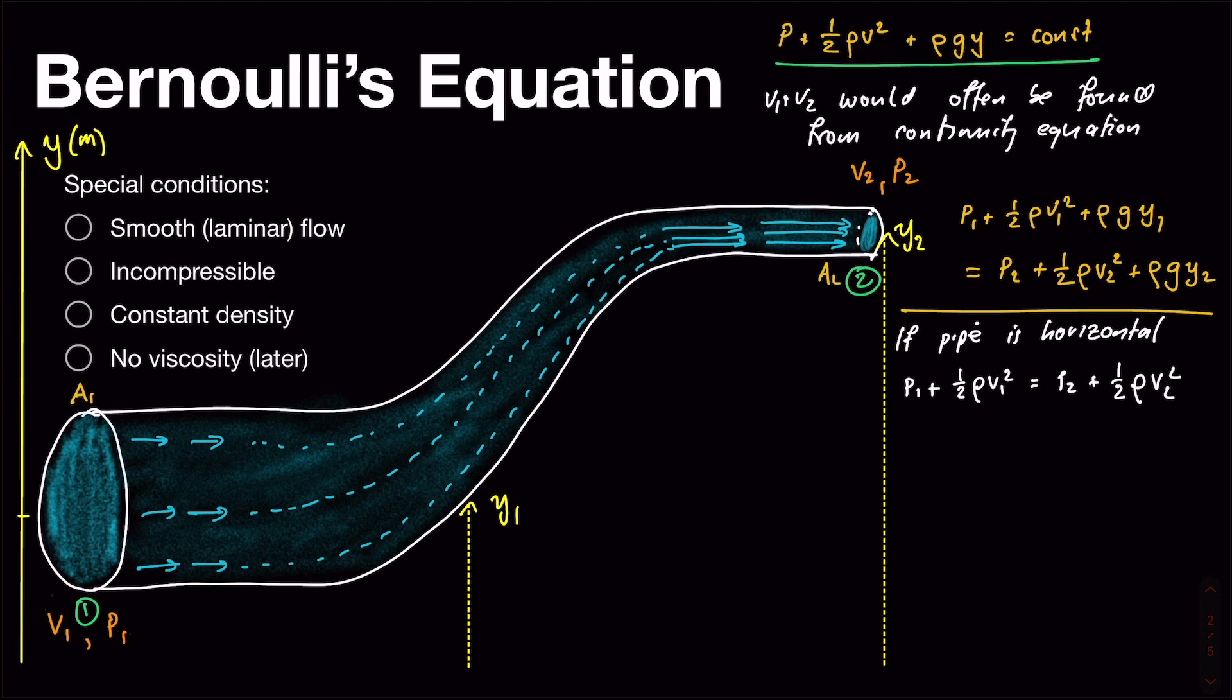Another case, if the, oh actually, before we move on, we could also rearrange this slightly, we could rearrange it to be p1 minus p2, and I would encourage you to check my working here, would equal one half of rho v2 squared minus v1 squared. You might come across this equation, which by the way is called Bernoulli's equation, the overall one up here. You might come across it written more like this, we've got a change in pressure and a change in difference in the squares of the velocities.